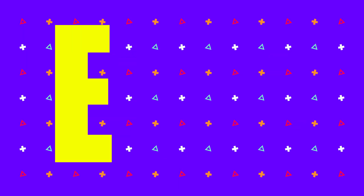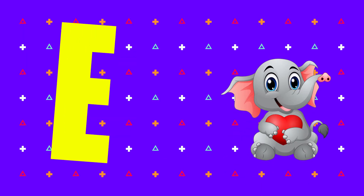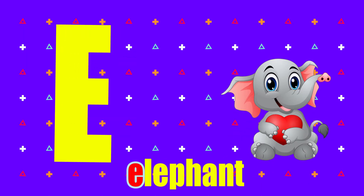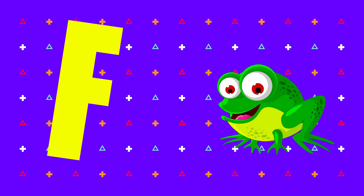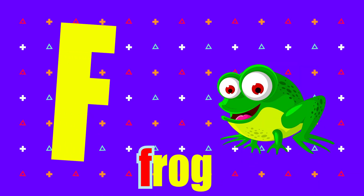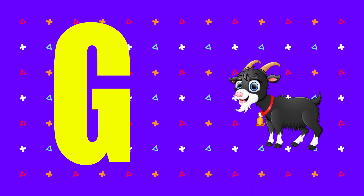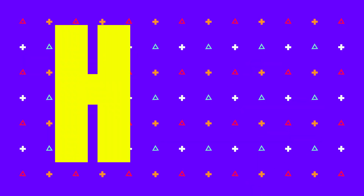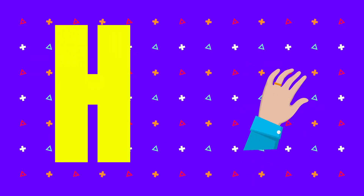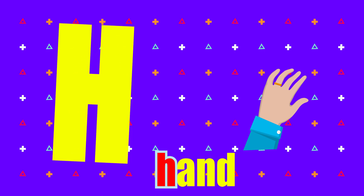E is for elephant, e-e-elephant. F is for frog, f-f-frog. G is for goat, g-g-goat. H is for hand, h-h-hand.